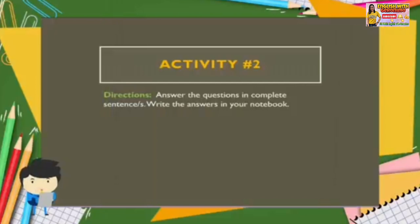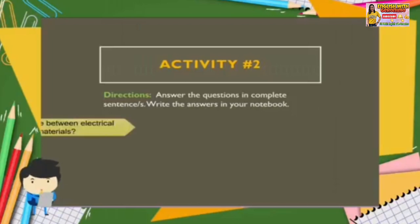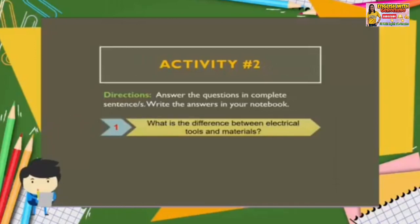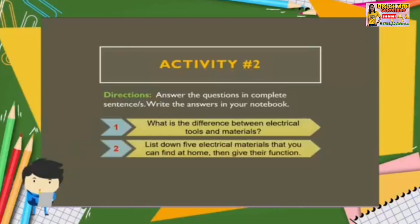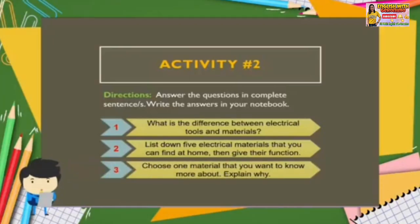Let's have activity number two. Directions: answer the questions in complete sentences. Write the answers in your notebook. Number one: what is the difference between electrical tools and materials? Number two: list down five electrical materials that you can find at home, then give their function. And number three: choose one material that you want to know more about and explain why. Pause the video to answer, then play it again when you're ready for checking.